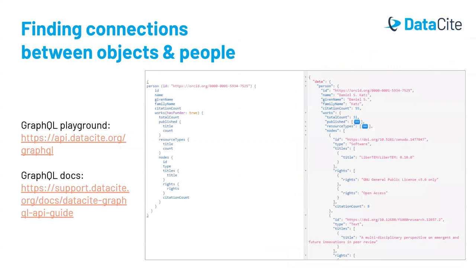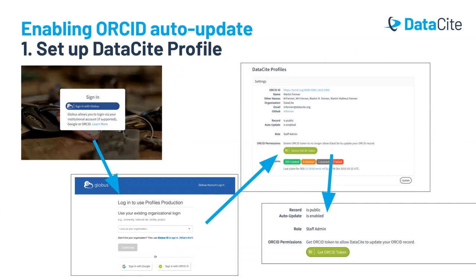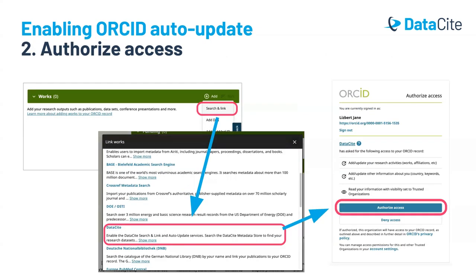It is easy to find connections between people and objects. Users can search for a researcher using the People tab on DataCite Commons, and on the person profile page, all of the outputs this particular researcher has created and contributed will be listed with visualized analytics. Connection between objects and people can also be queried using the GraphQL API. Entering ORCID references in dataset metadata is useful as DOIs can be automatically added to ORCID records when the name identifier metadata for creators includes an ORCID ID. To enable ORCID auto-update, sign in on DataCite using your ORCID credentials, go to the settings page, and get an ORCID token to allow DataCite to update ORCID records.